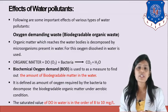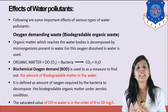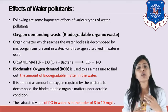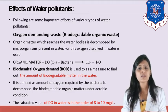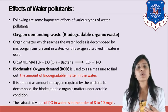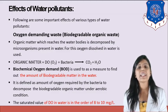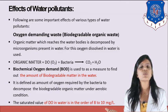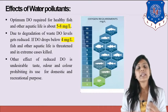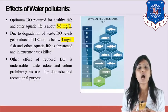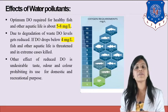The saturated value of dissolved oxygen in water is in the order of 8 to 10 milligrams per liter — that is the standard concentration. Whenever any oxygen demanding waste enters the water, it demands oxygen. Bacteria decompose the organic matter by utilizing dissolved oxygen. When oxygen is utilized, the oxygen level decreases to 5 to 8 milligrams per liter, which is still acceptable.